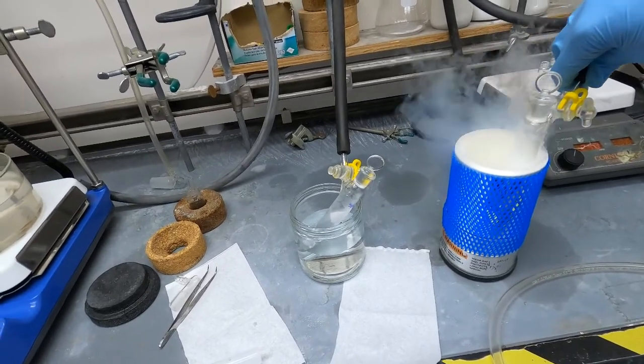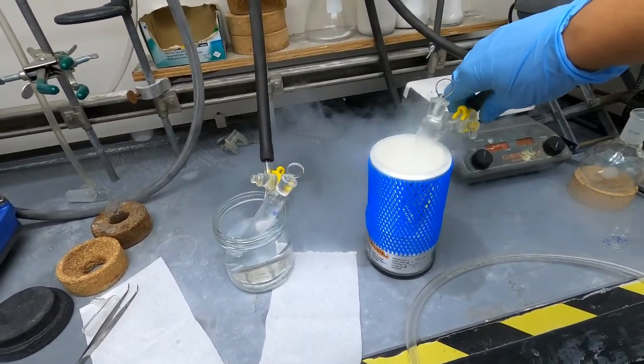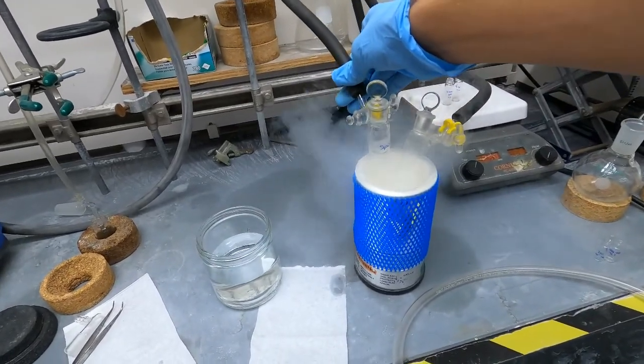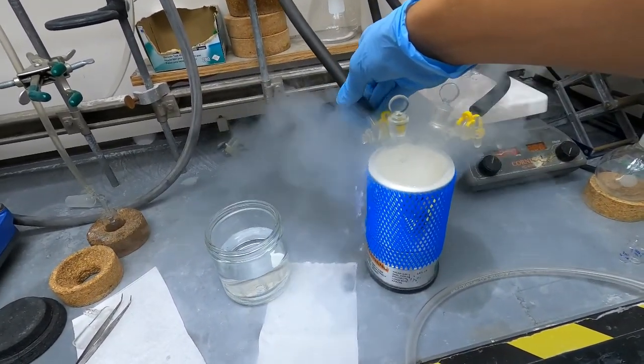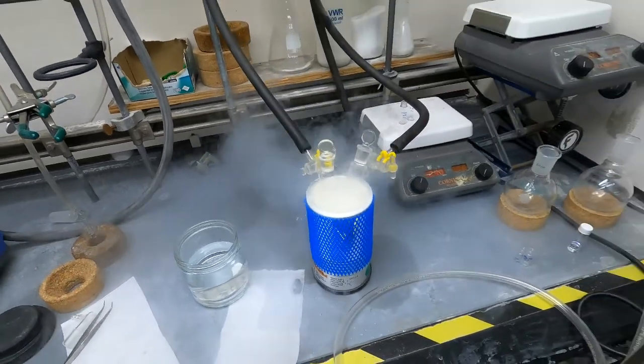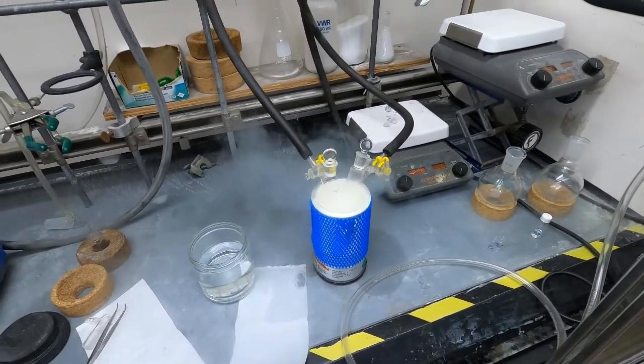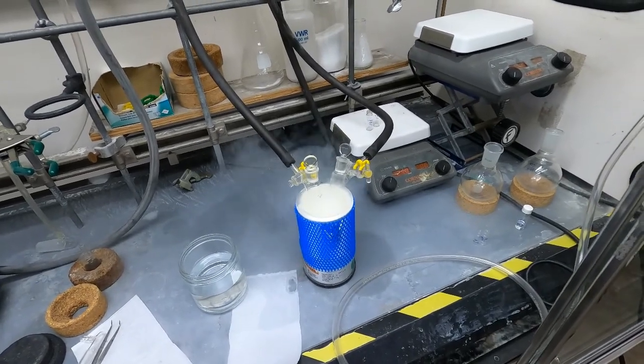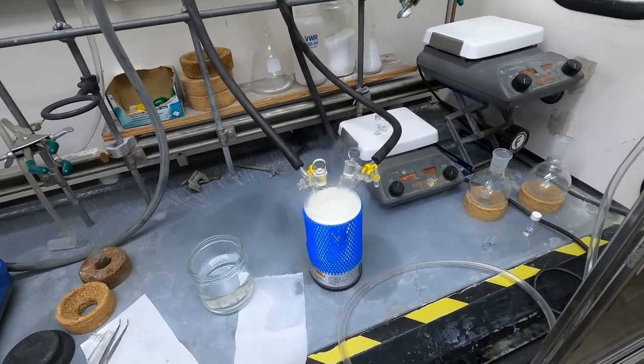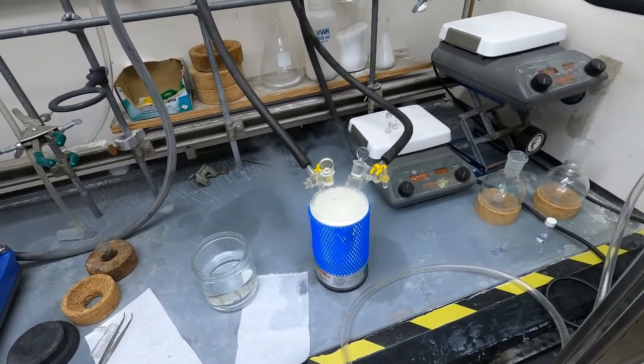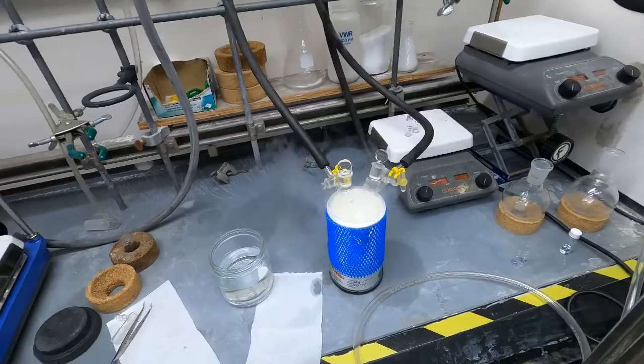We're going to put both of these Schlenk tubes back into our liquid nitrogen dewar so that we can freeze again. I'll fast forward through some of these parts but we're doing the exact same thing that I showed initially. We're going to freeze and then once the reaction mixture is frozen, we'll pump on the mixtures for five minutes and then thaw and do that cycle one more time.